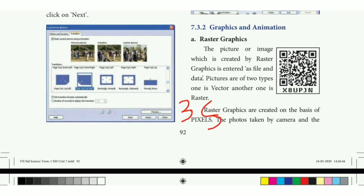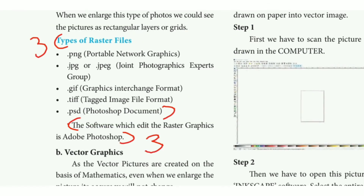Take page number 92. Under the raster graphics heading, note the second part: first line, first point, third point, raster image, second point. Also note types of raster files and the heading. Then the software used to edit — third point — total raster graphics: mark these three points.